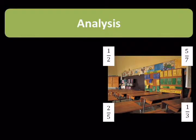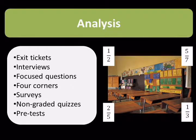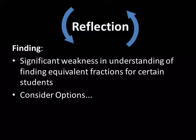In order to look for gaps in student understanding and to scaffold the learning process, the teacher might use a four corners strategy to determine whether students can identify equivalent fractions. Students have to choose the corner that matches the fraction they have been given. Upon completion of the four corners activity, the teacher discovers a small group of students are having difficulty identifying and understanding equivalent fractions.